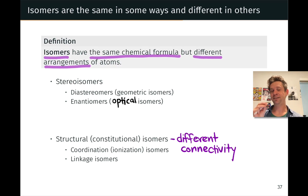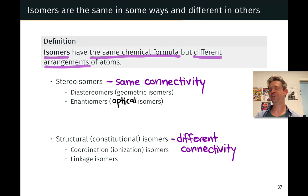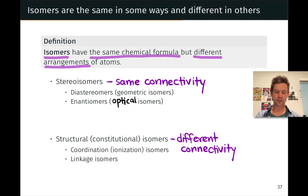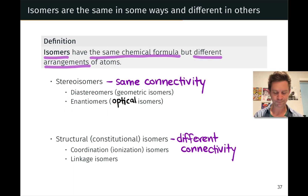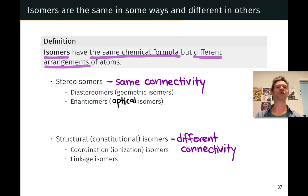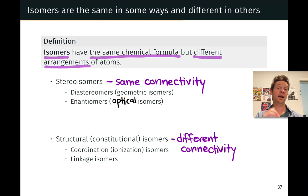Stereoisomers have the same bonds arranged in a different way in three-dimensional space — same numbers and types of atoms, the same chemical linkages, but those linkages are arranged differently in space. There are two classes of stereoisomers important to us. Enantiomers are stereoisomers that are mirror images, also known as optical isomers. Diastereomers are stereoisomers that are not mirror images; we'll focus in particular on geometric or cis-trans isomers, which differ in a very specific way and are not related as mirror images.